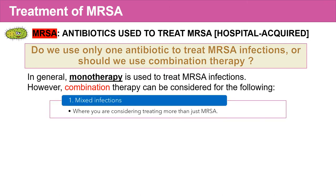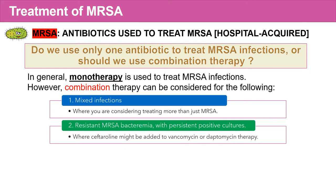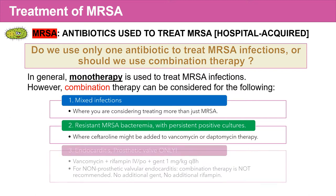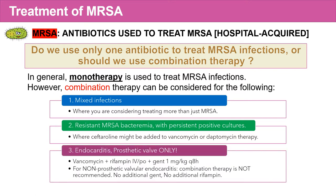Combination therapy is considered when: one, you are treating more than just MRSA, where you have mixed infections; two, where you have resistant MRSA bacteremia with persistent positive cultures; and three, in endocarditis — for prosthetic valve endocarditis only. This is where we add rifampin and gentamicin to vancomycin. For non-prosthetic valvular endocarditis, we don't recommend combination therapy — no additional gentamicin and no additional rifampin.